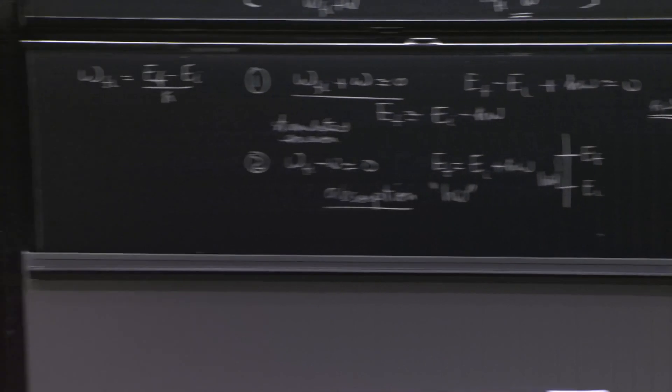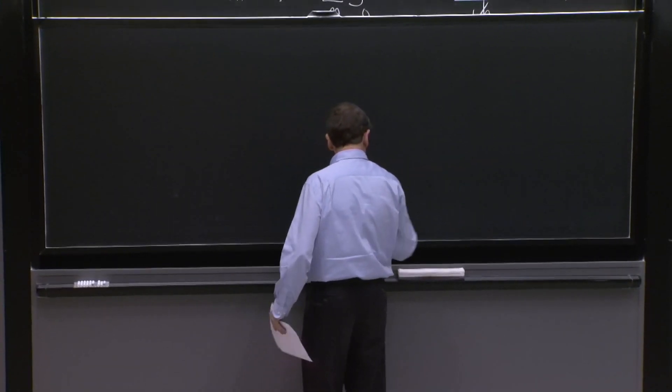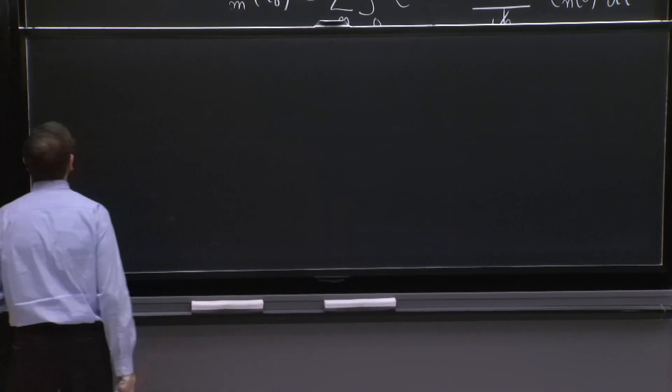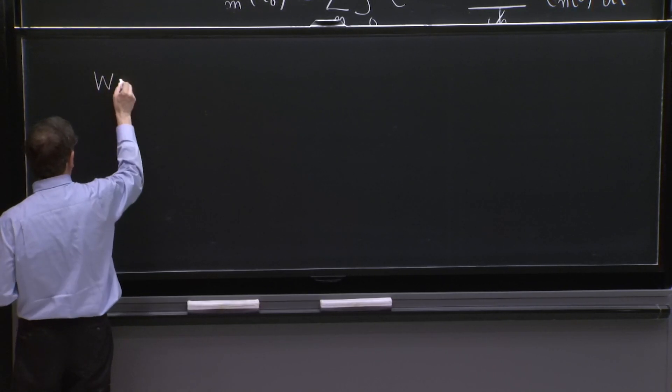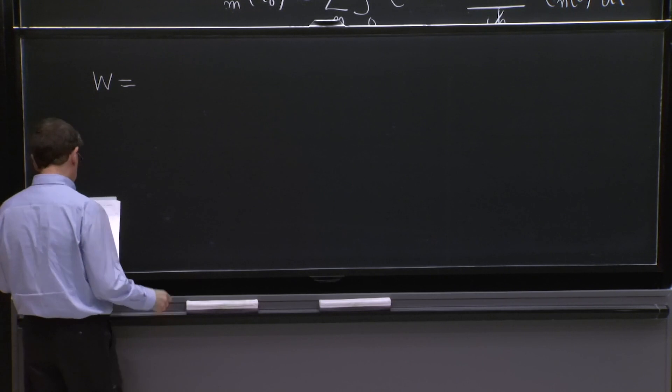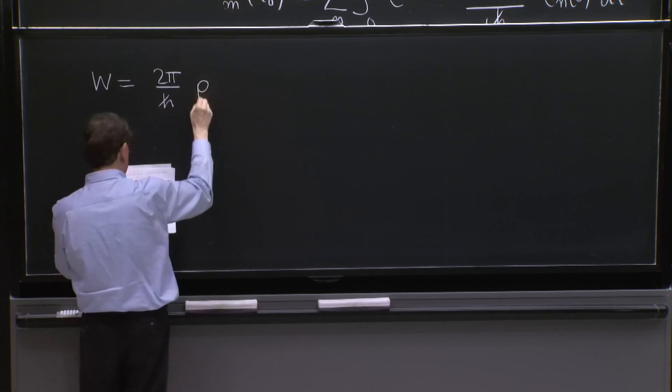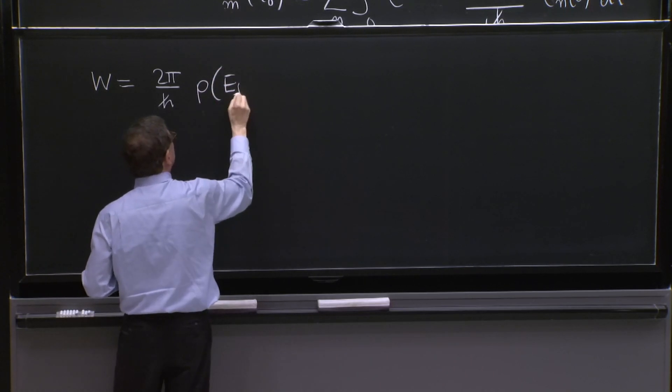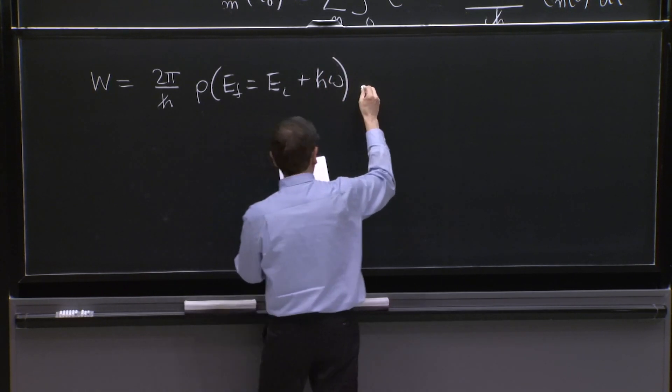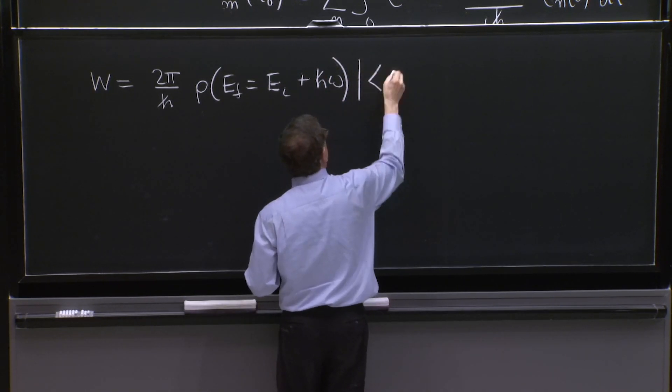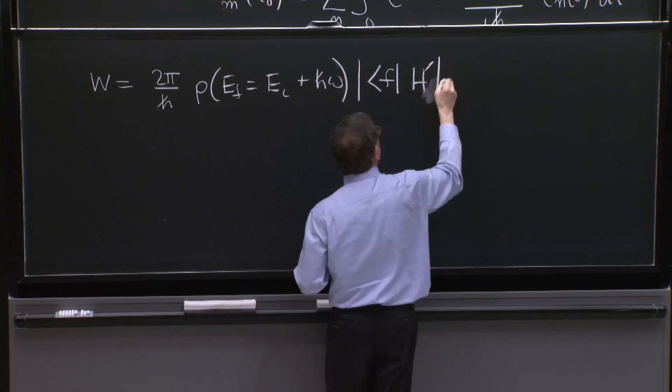Remember, that's a transition probability. And the rate is obtained by dividing this by the time that has elapsed to find the probability per unit time. That's the rate is probability for transition per unit times 2 pi over h bar.